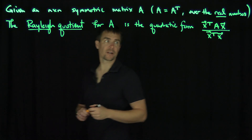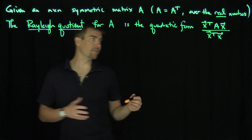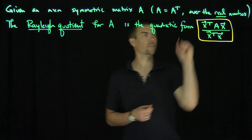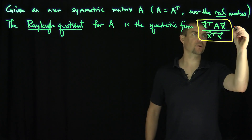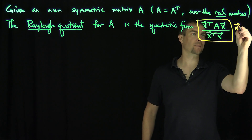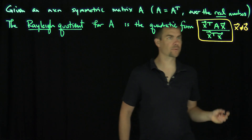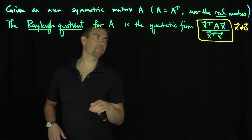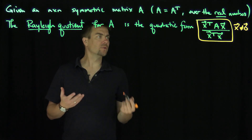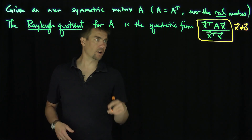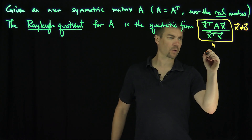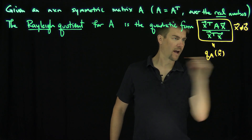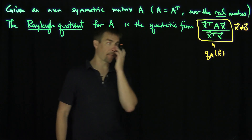Since A is symmetric, we want to investigate properties of this quotient. This is for any x that is non-zero — if x is the zero vector, this would be degenerate. So for x non-zero, we consider these quotients, which we can call QA of x.